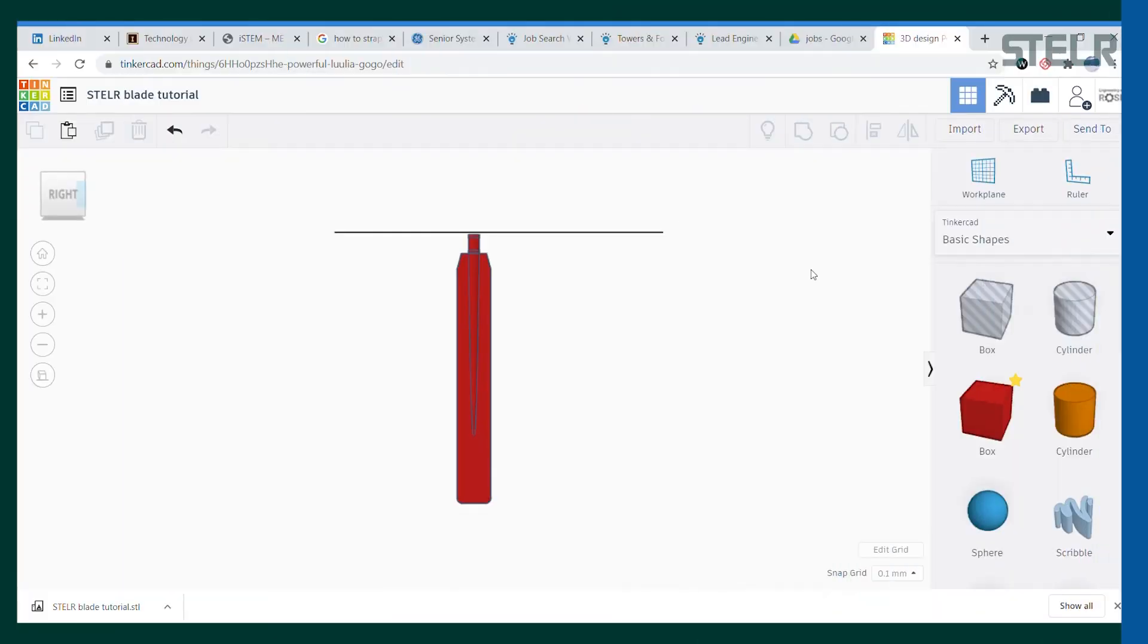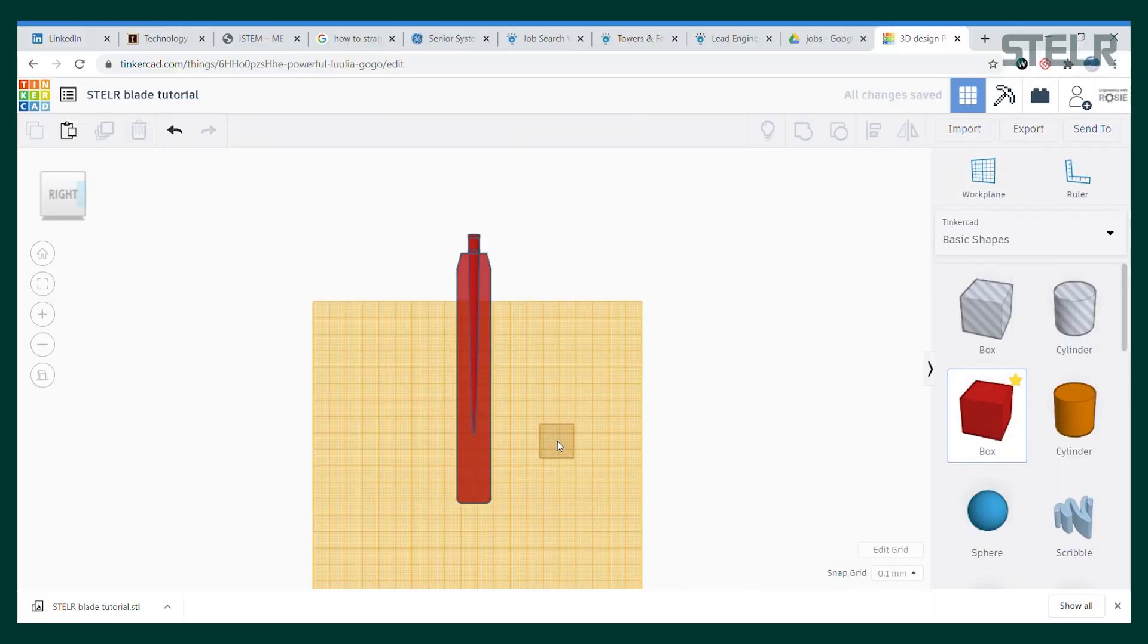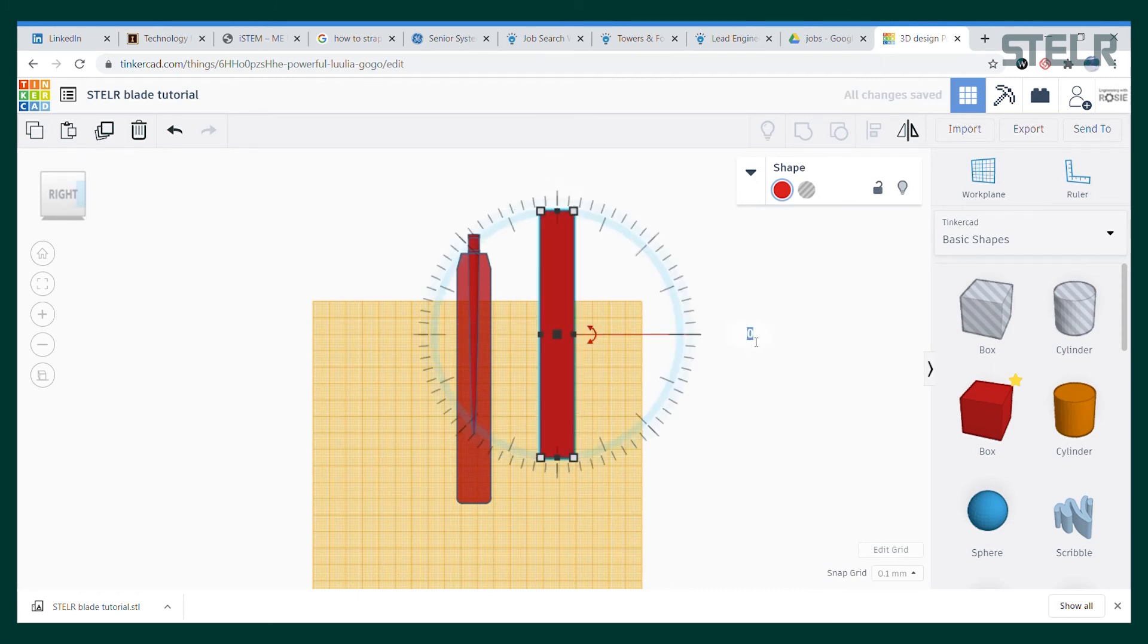And now I want to show you how to make just one more change if you would like. This part is totally optional. I'm going to make the blade a little bit tapered so that it is thinner at the tip than at the place where it attaches to the hub. So to do this I'll take a block and lengthen it and then rotate it just a little bit. I'll make it 2.5 degrees. Then I'm going to make it a hole.